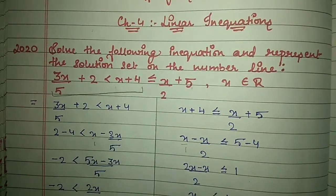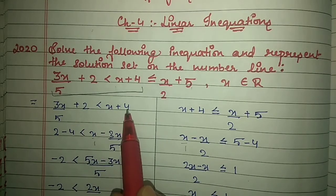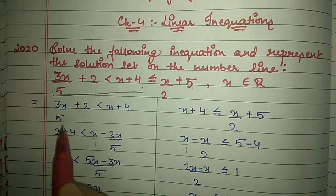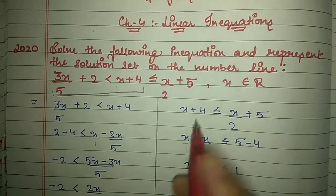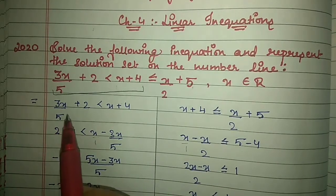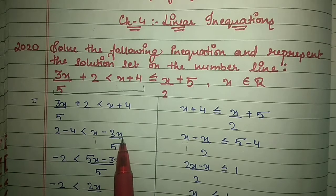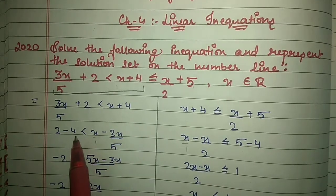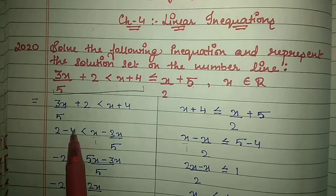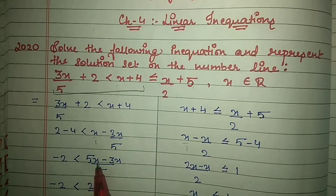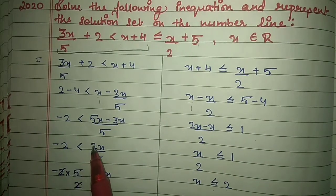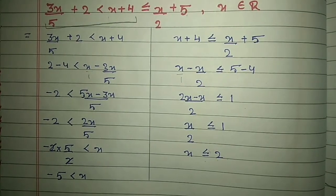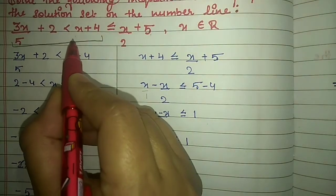We take the first half of the inequation: 3x/5 + 2 < x + 4. When solving the first half, keep x on the right side. Shift 3x/5 to the right — it becomes minus 3x/5 — and shift 4 to the left as minus 4. So 2 minus 4 gives minus 2. Taking LCM gives 5x minus 3x over 5, which equals 2x/5. Shifting the 5 and 2 across, they cancel, giving minus 5 < x.